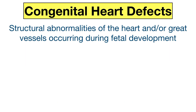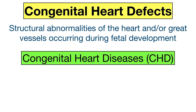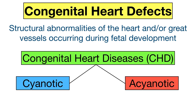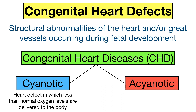Congenital heart defects are structural abnormalities of the heart or great vessels occurring during fetal development. You may also hear them referred to as congenital heart diseases or CHD. CHD can be subdivided into two types: cyanotic and acyanotic. Cyanotic defects are heart defects in which the blood pumped to the rest of the body contains less than normal amounts of oxygen.